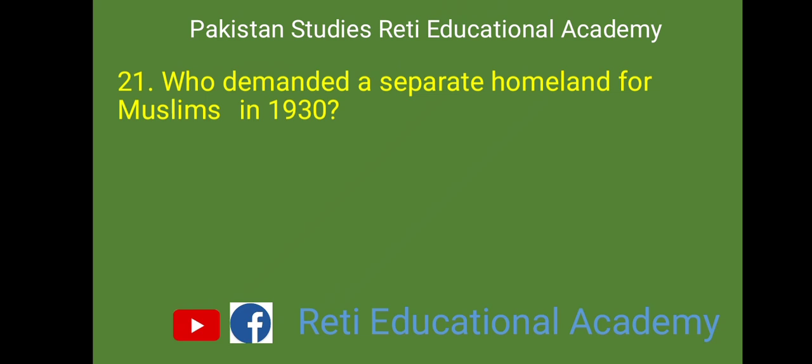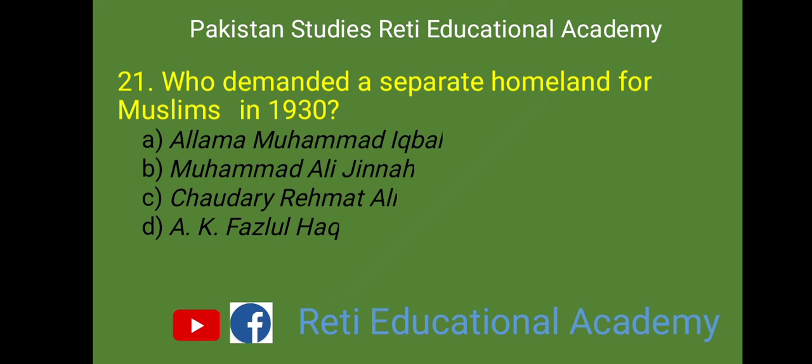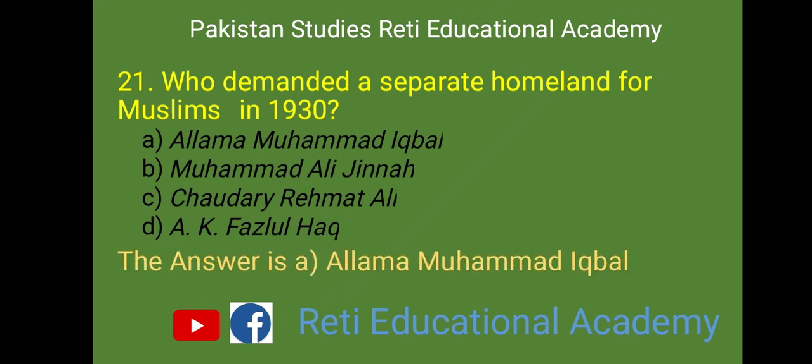MCQ number 21: Who demanded a separate homeland for Muslims in 1930? A. Allama Muhammad Iqbal, B. Muhammad Ali Jinnah, C. Chaudhary Rahmat Ali, D. A.K. Fazlul Haq. And the right answer is A. Allama Muhammad Iqbal.